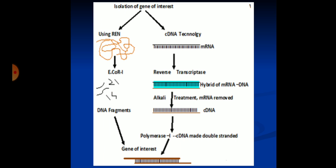The overview of isolation of the gene of interest: one method uses REN, the other uses cDNA technology. In cDNA technology, the intron-free functional mRNA is isolated. This mRNA is used to synthesize a DNA strand using reverse transcriptase, producing a double-stranded hybrid with one mRNA strand and one cDNA strand. The mRNA is then removed using alkali or RNase treatment, leaving single-stranded cDNA. The cDNA is made double-stranded using DNA polymerase, and sticky ends are added.